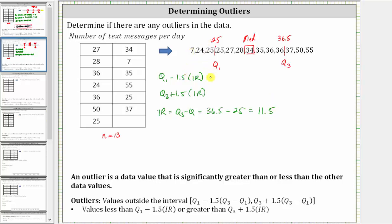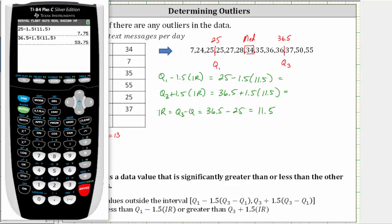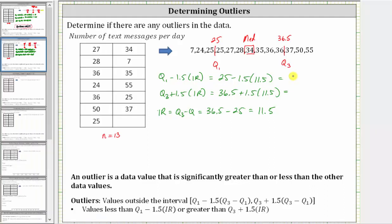So Q1 minus 1.5 times the interquartile range is 25 minus 1.5 times 11.5. And Q3 plus 1.5 times the interquartile range is 36.5 plus 1.5 times 11.5. Now we need to compute these values, which are 7.75 and 53.75. If there are any data values less than 7.75 or greater than 53.75, they are considered outliers.